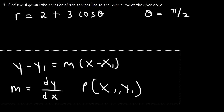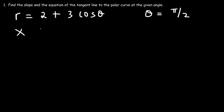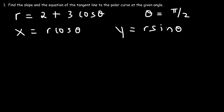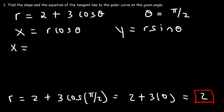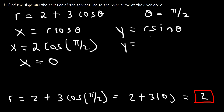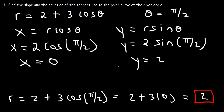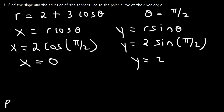Let's begin by finding x and y. Now x = r·cos(θ) and y = r·sin(θ). First, what is r? r = 2 + 3cos(π/2), and cos(π/2) = 0, so r = 2. Then x = 2·cos(π/2) = 0, and y = 2·sin(π/2) = 2·1 = 2. So our point is (0, 2).